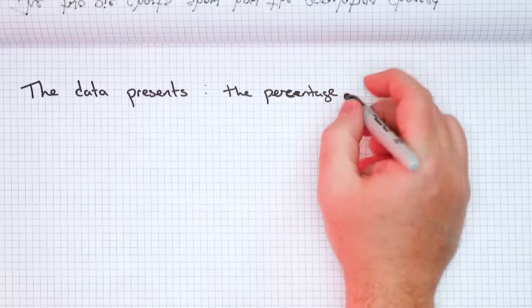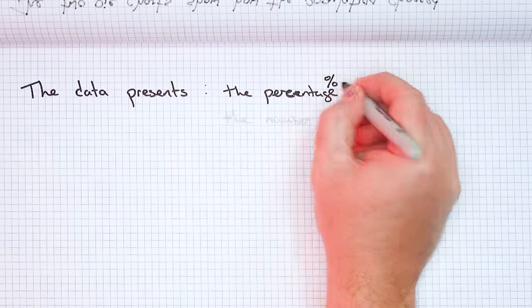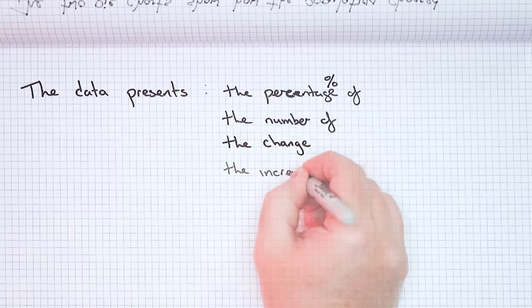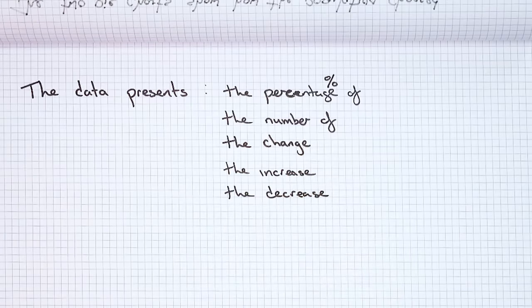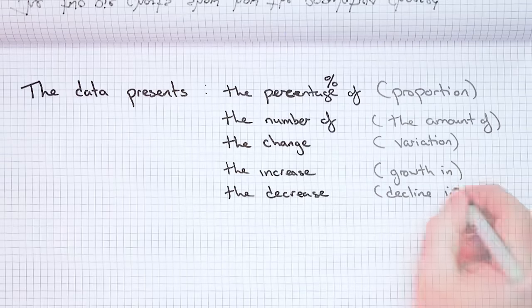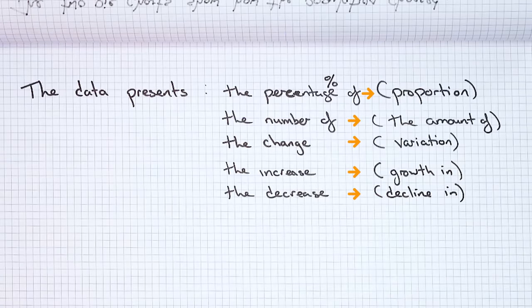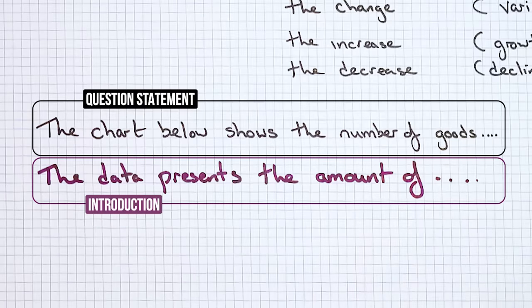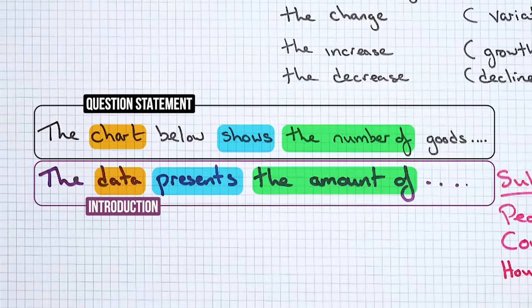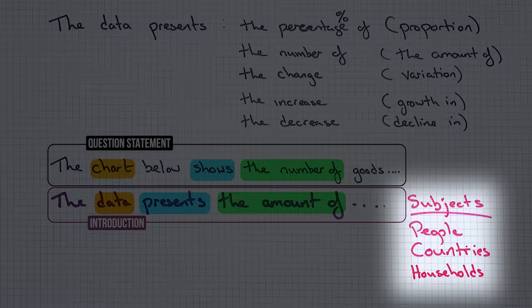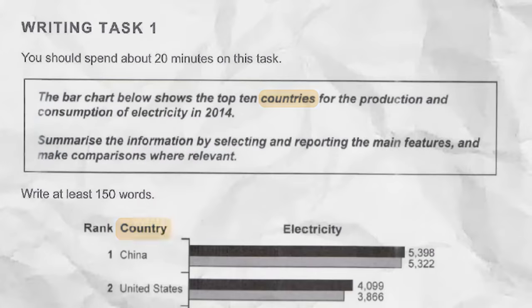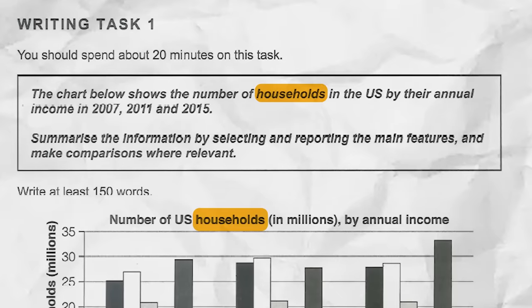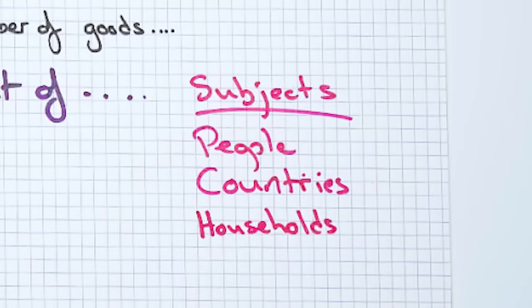After this, we normally get something like 'the percentage of,' 'the number of,' 'the change,' 'the increase,' or 'the decrease.' We just learn appropriate and accurate ways to express this so that it means the same thing but uses different words. So for example: 'the data presents the amount of...' The thing that normally comes next are subjects — this could be people, countries, households, or families. There are many different possibilities, and you should always keep an open mind about what might come up. But these were by far the three most common.